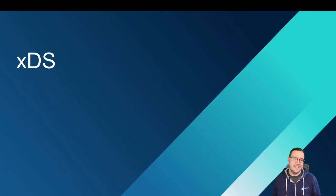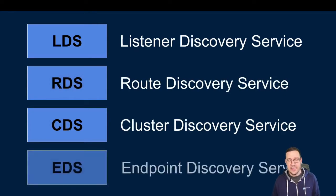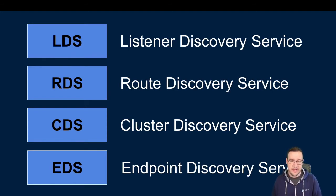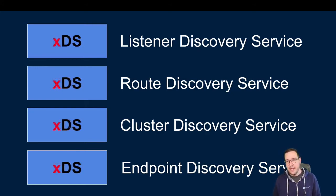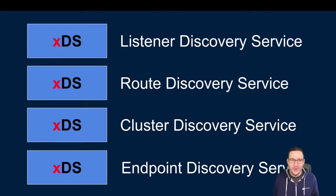Let's talk about XDS. We've introduced listeners, routes, clusters, and endpoints. Each has a different discovery service — an XDS protocol we can implement. Over gRPC, we can have each one return a list of listeners, routes, clusters, or endpoints. If you strip off the first letter and replace it with an X, you can see where the XDS name comes from. There are a bunch of different protocols — LDS, RDS, CDS, EDS — these are just four I'm introducing; there are more to explore.